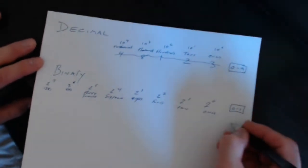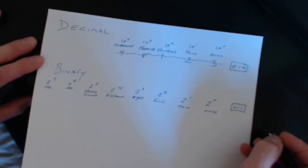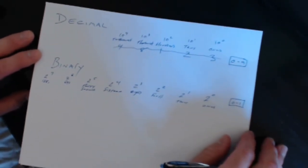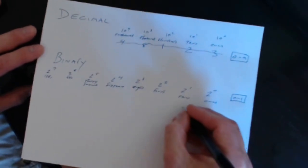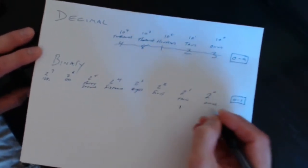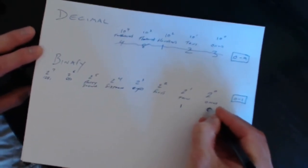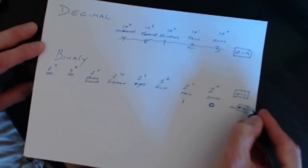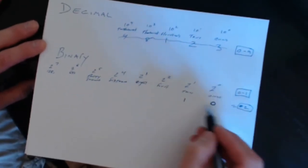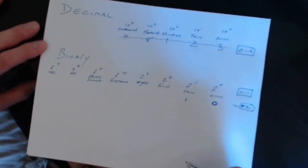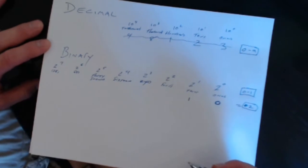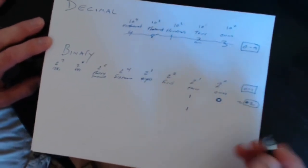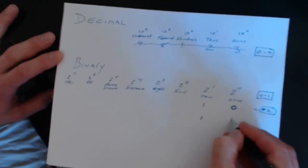Let's say we wanted to write the number 2. That means we'd have one 2, and zero 1s — so in binary, 2 is written as '10'. That's the number 2 in decimal written in binary. What about the number 3? We'd have one 2 and one 1, which equals 3 in decimal — so 3 in binary is '11'.